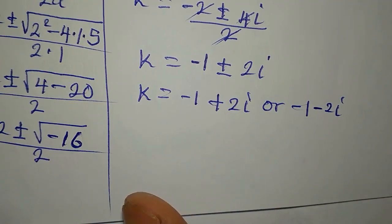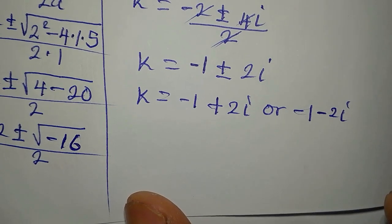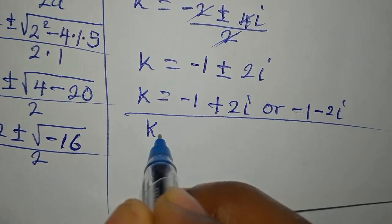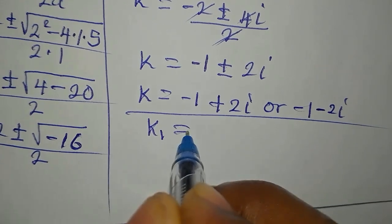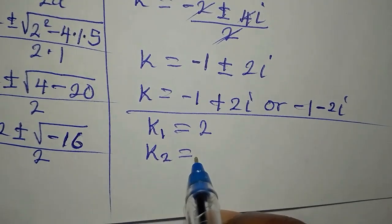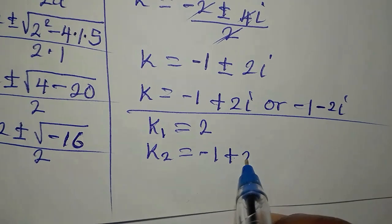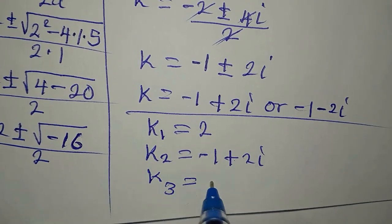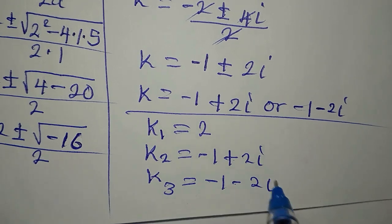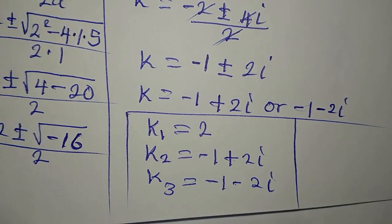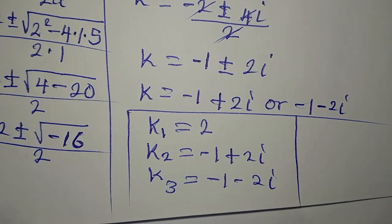Bringing the three solutions together: k₁ equals 2, k₂ equals negative 1 plus 2i, and k₃ equals negative 1 minus 2i. Only the first solution is real; the other two are complex solutions.